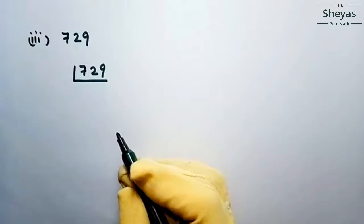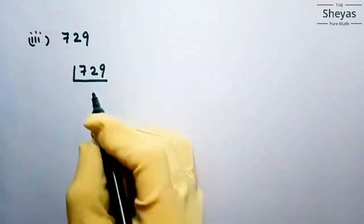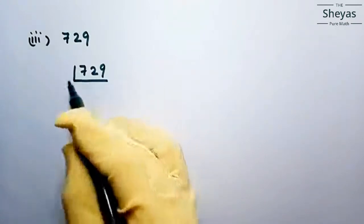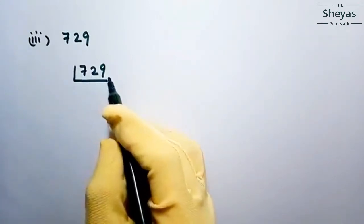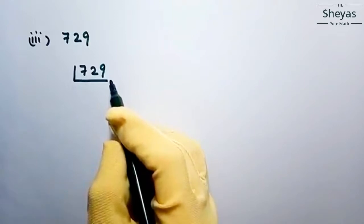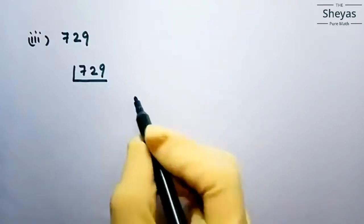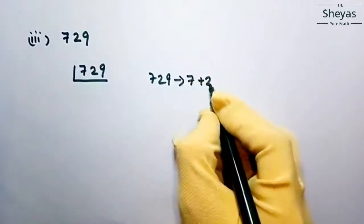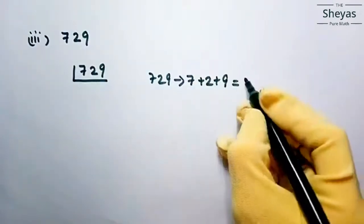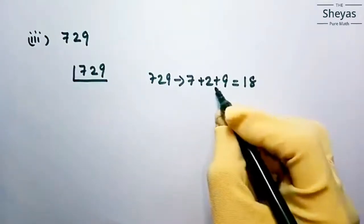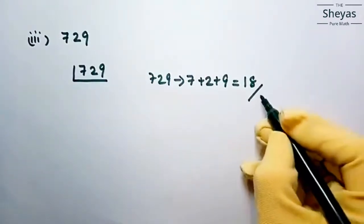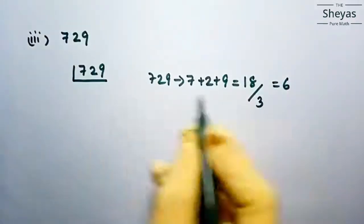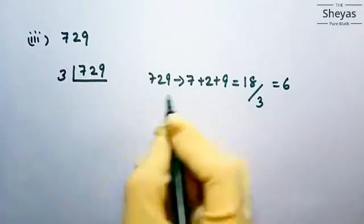Next problem: 729. Checking divisibility: it is not an even number, so not divisible by 2. Let us check divisibility by 3. The sum of digits of 729 is 7 plus 2 plus 9 equals 18, and 18 is divisible by 3. So write down 3. Dividing 729 by 3 gives 243.